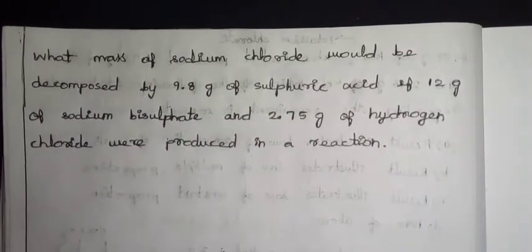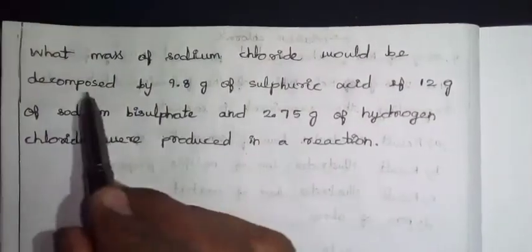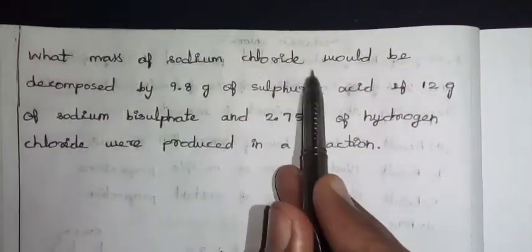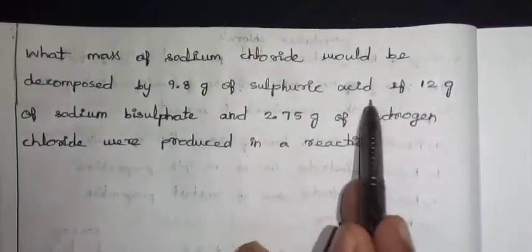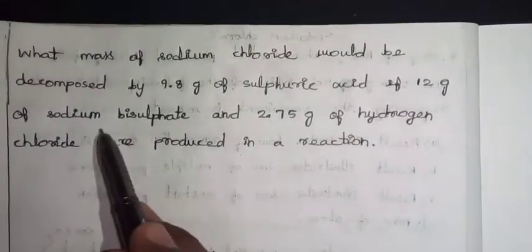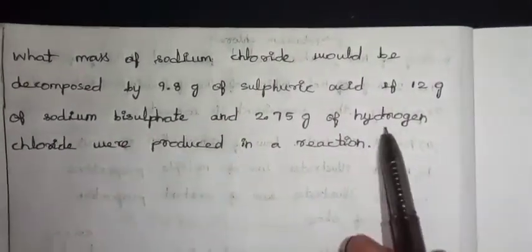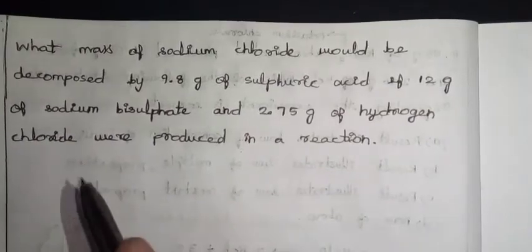What do I say about this? Sodium chloride would be decomposed by sulfuric acid. That's sodium chloride, NaCl, and sulfuric acid will decompose. If we are going to produce sodium bisulfate and hydrogen chloride, HCl. You can see this reaction.